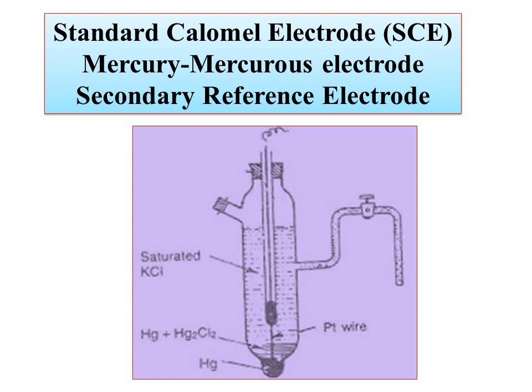The calomel electrode uses mercury as the metal and mercurous chloride. We have a saturated KCl solution which links mercury and mercurous chloride. A platinum wire is dipped into the mercury layer and provides external electrical connection.